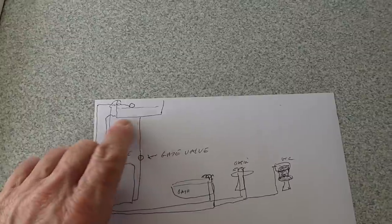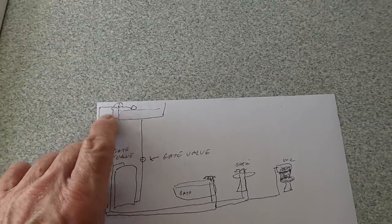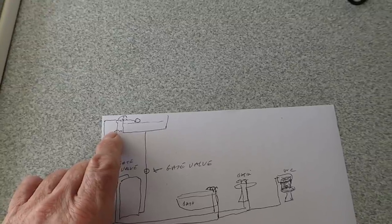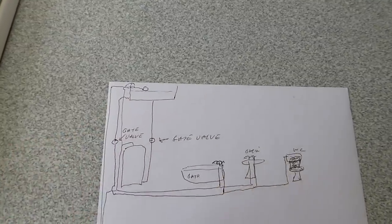They might be just underneath the tank or outside of it. They're usually the pipes come out the side, very rare they come from the bottom. So you may have your gate valves here, if there's none in the airing cupboard.